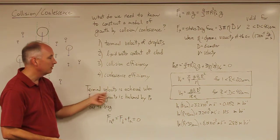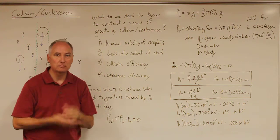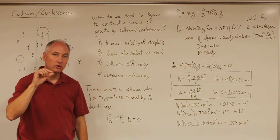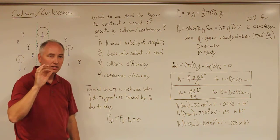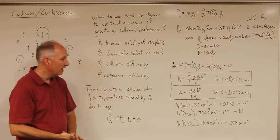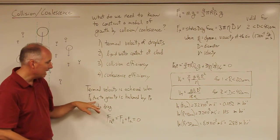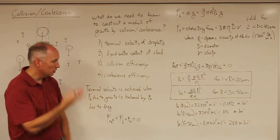The terminal velocity is defined as the speed of an object that's falling when there's no net force on that object. The two forces acting on our cloud droplets are the downward force due to gravity which is pulling it down,